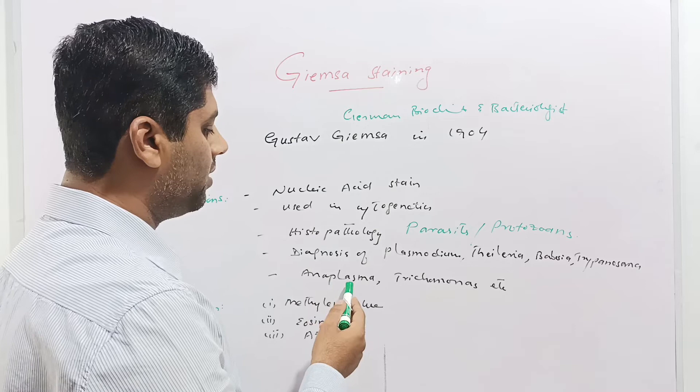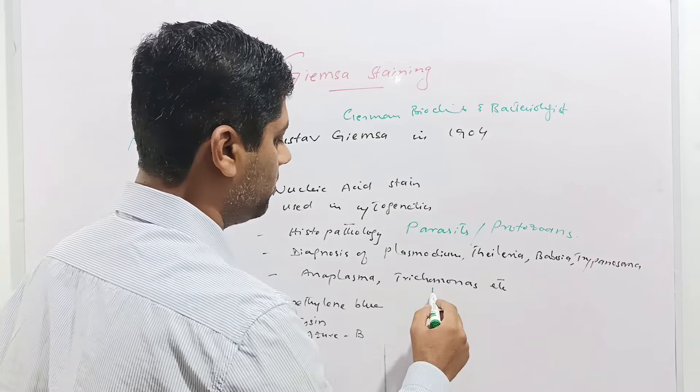Anaplasma or ehrlichia causes anaplasmosis, and trichomonas vaginalis is another protozoan which causes vaginal infections.